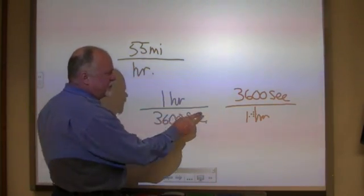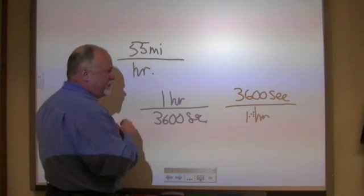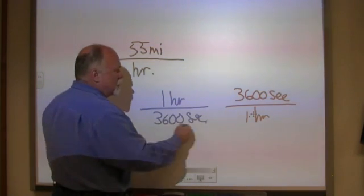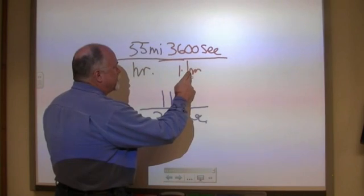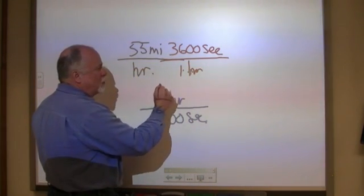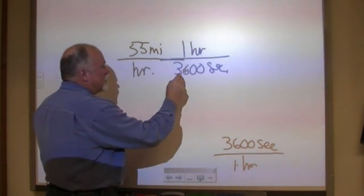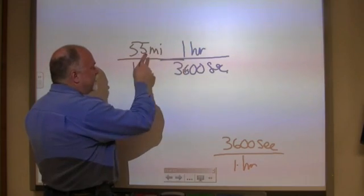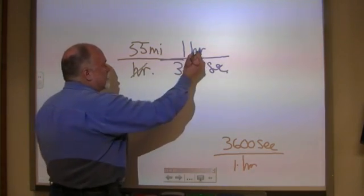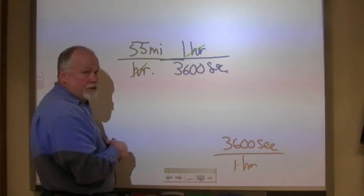So now the question is, which one of these conversion factors? They both represent the same thing, but they're in different forms. Which one do I need to get rid of hours and to be left with seconds? Well, if I multiplied by this one, I would have hours times hours. I would have hours squared for a unit. If I use this one, then I have hours divided by hours, and they would cancel out, leaving me with units of seconds. So this is the conversion factor I want to use.